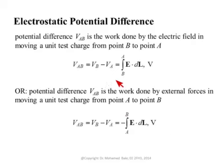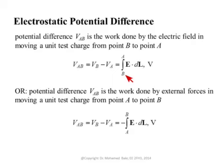There is an alternative definition: VAB can also be defined as the work done by the electric field — not against it — in moving the unit charge from point B to point A, reversing the order of points. These two definitions are equivalent: you either switch the order of points or include the negative sign. Again, my word of warning — VAB is VB minus VA, which is different from the notation you may have used in circuit courses.